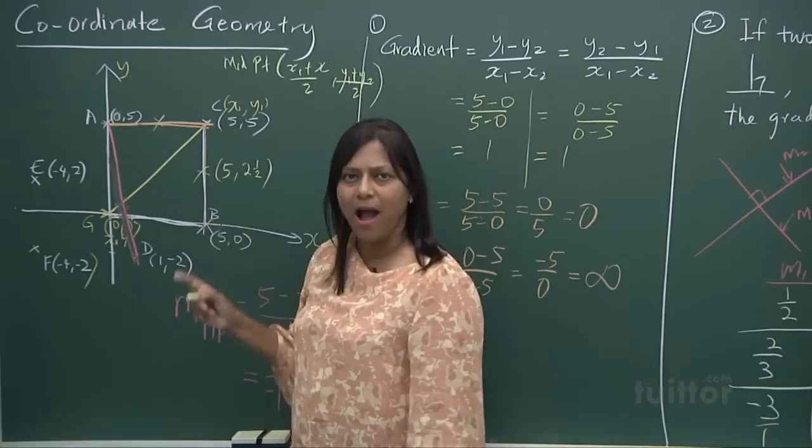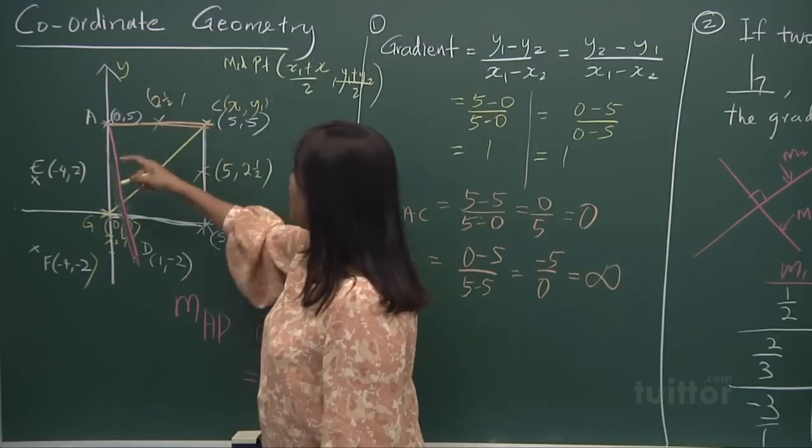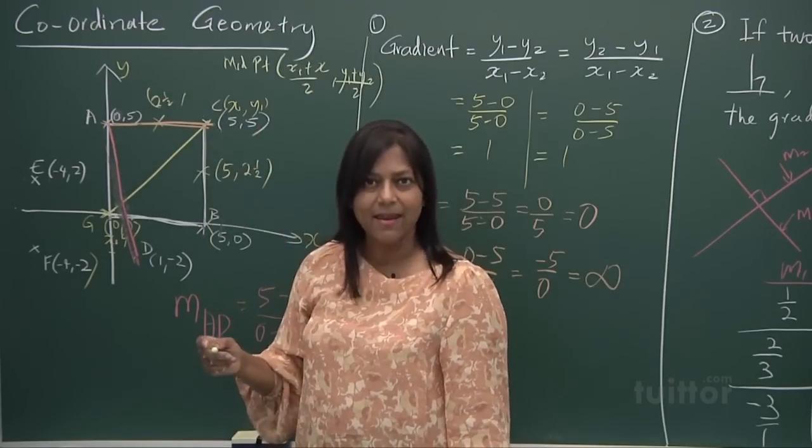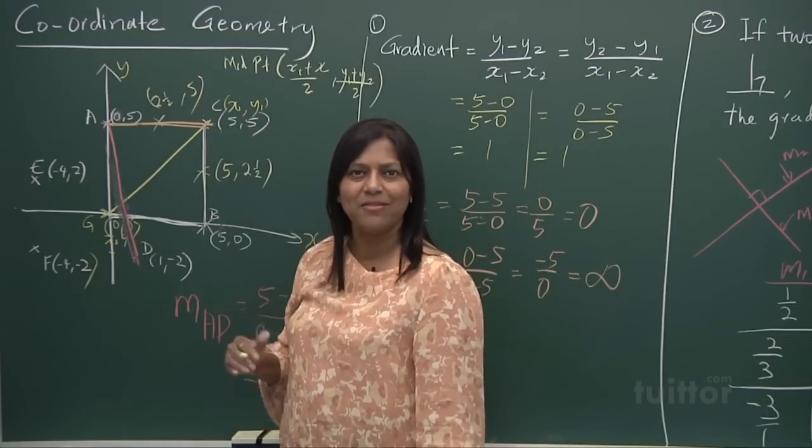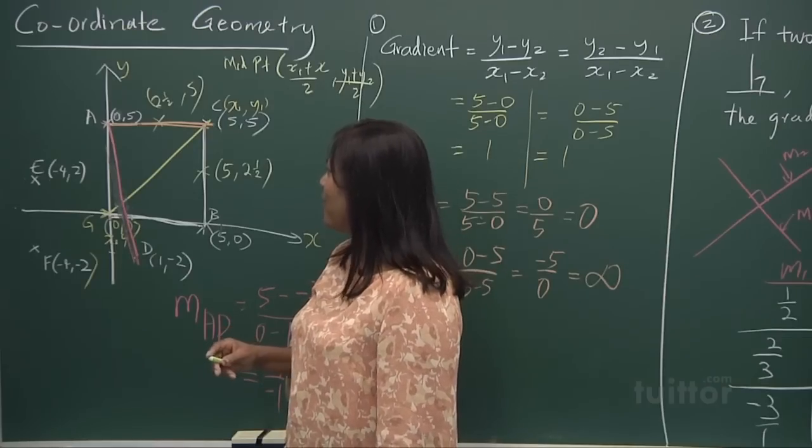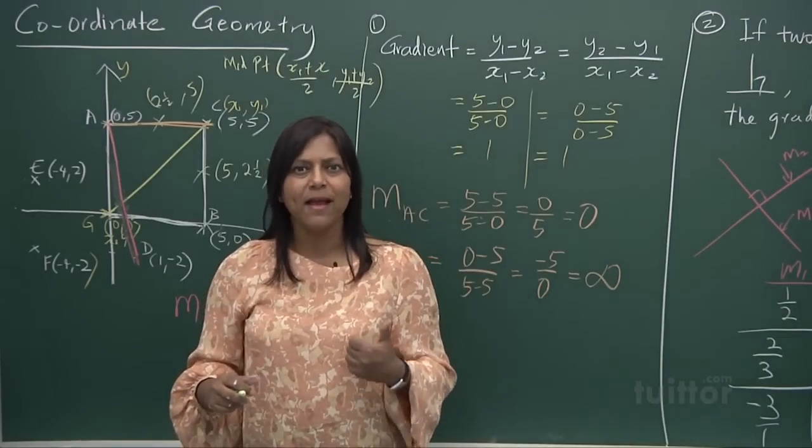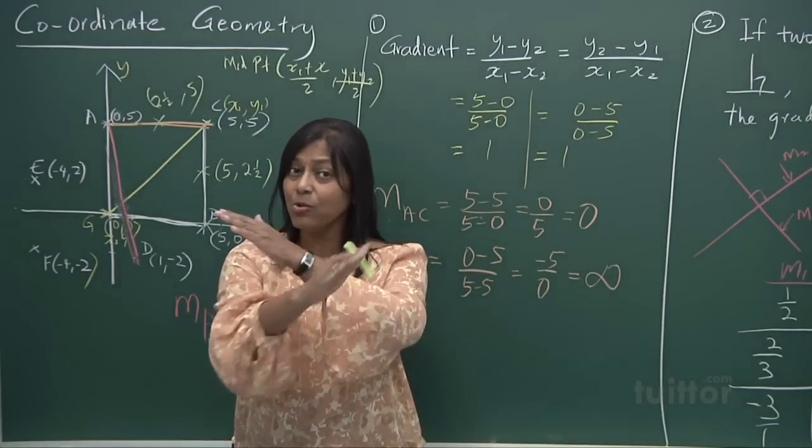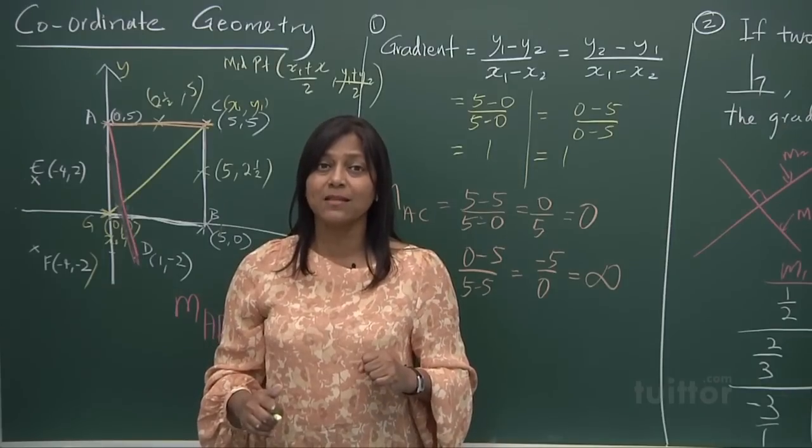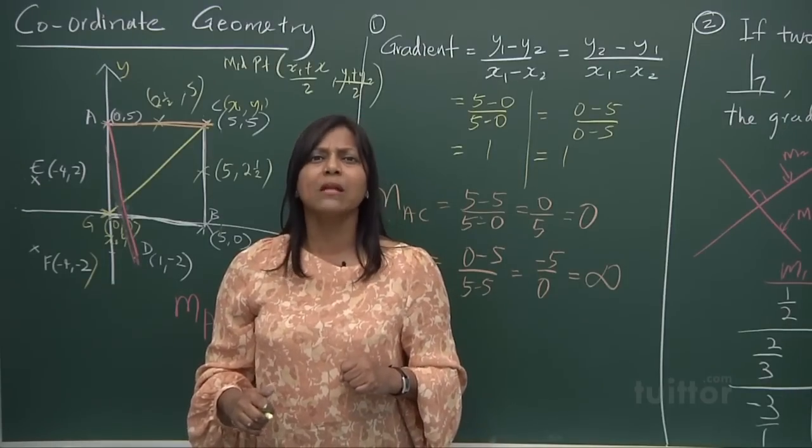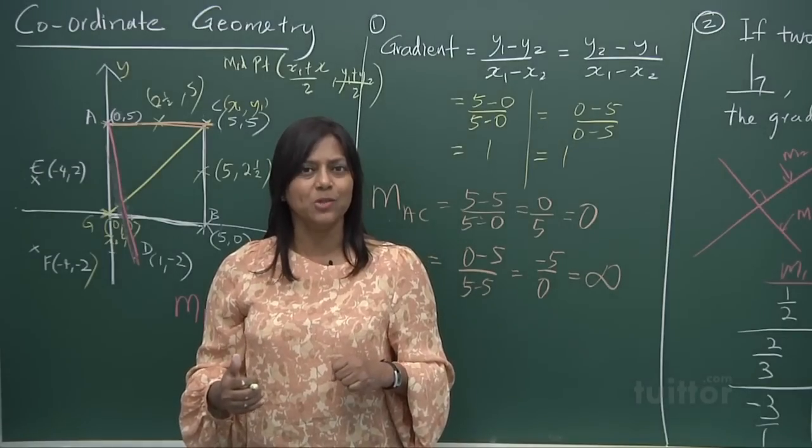So zero plus five divided by two is two and a half. And as for your Y. Five plus five. Ten. Ten divided by two. It is still five. It's still lying on that same line. So I hope you've got a better understanding of midpoint, gradient. And if two lines cut at perpendicular. They are perpendicular to each other. The product is a minus one. We'll come to more rules in coordinate geometry to facilitate you in the doing of the exercises.